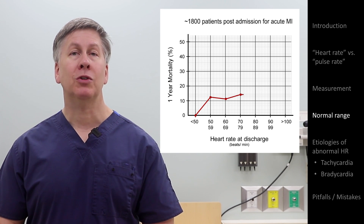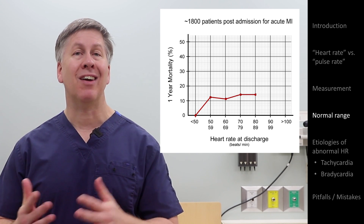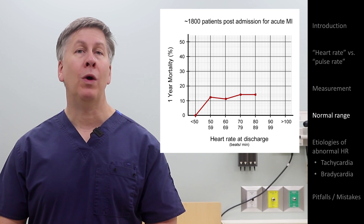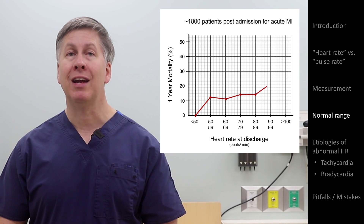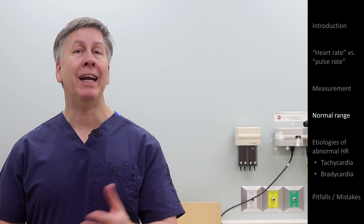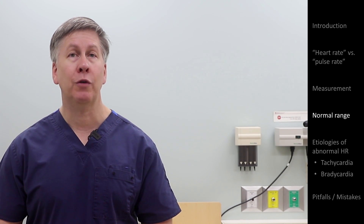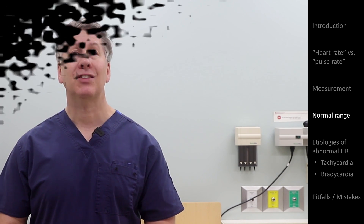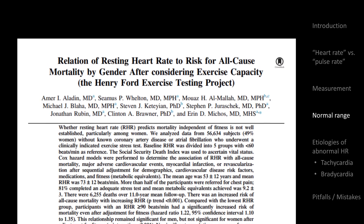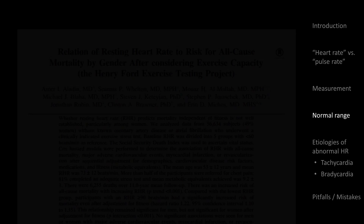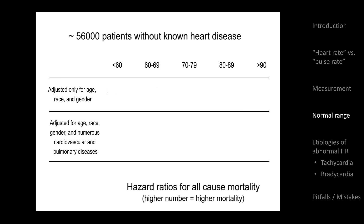We see that the mortality for heart rates of 50 through 89 are uniform, but once the rate at discharge creeps above 90, mortality starts to climb pretty rapidly. But the danger of faster heart rates isn't limited to just patients who've had heart attacks. In a study of 56,000 patients without known heart disease, the faster the resting heart rate, the increased risk of a major adverse cardiovascular event such as a heart attack or cardiac arrest.